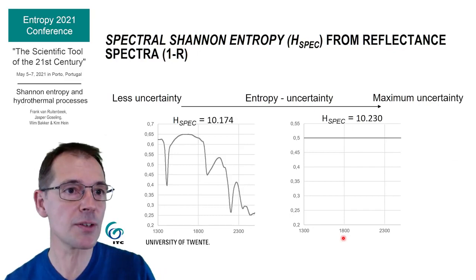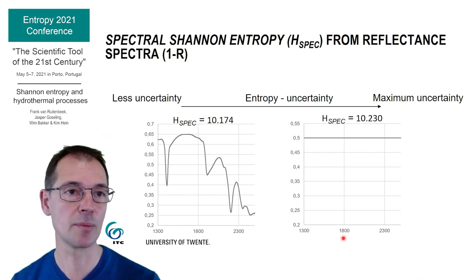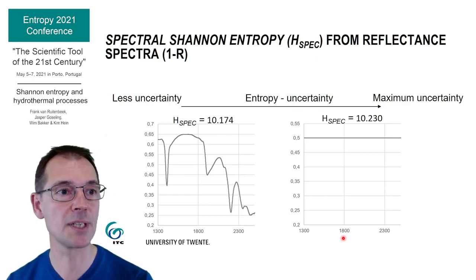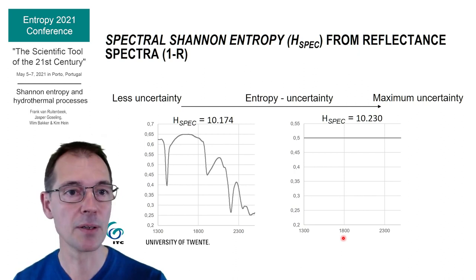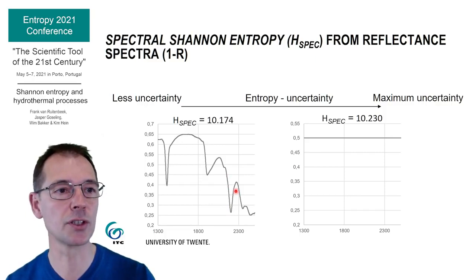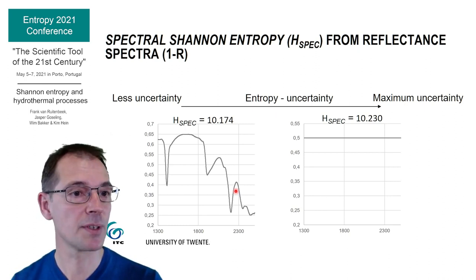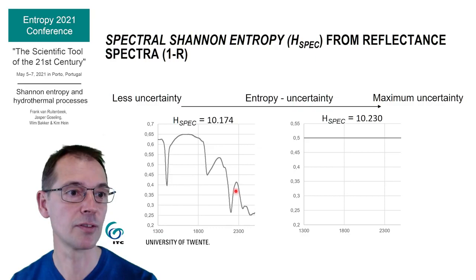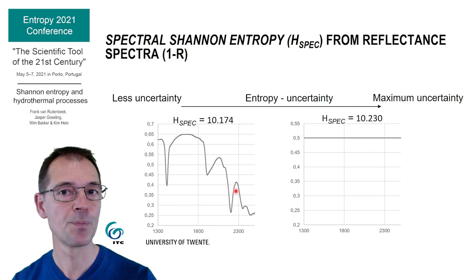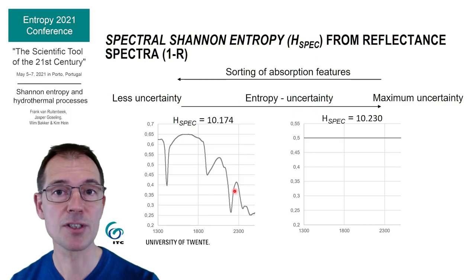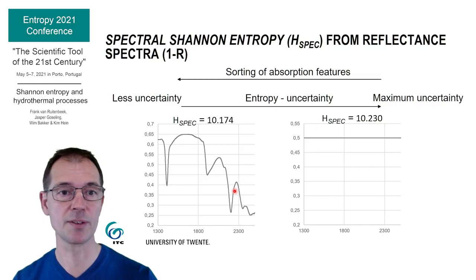In this slide you can see how the spectral Shannon entropy was calculated from the infrared reflectance spectra of the rock samples. The figure on the left shows the reflectance of infrared radiation in the wavelength range between 1,300 and 2,450 nanometers by a rock that contains the mineral muscovite. Typical here are the absorption features. After normalization and conversion to absorption — which is 1 minus the reflectance — we can calculate the Shannon entropy of this distribution. The muscovite reflectance spectrum has a spectral entropy value of 10.174. The hypothetical reflectance curve on the right represents maximum uncertainty and has a value of 10.230. The decrease in uncertainty towards the left can, similar to the previous slide, be interpreted as a form of sorting — in this case, sorting of absorption features.